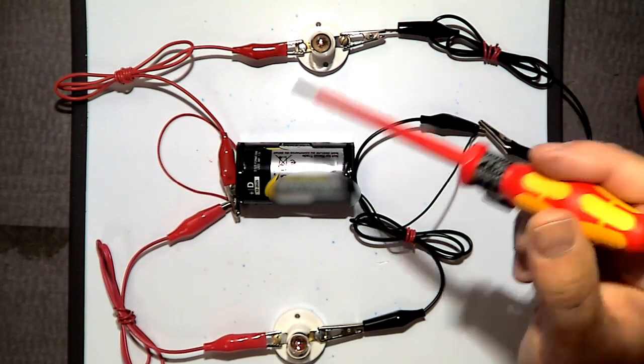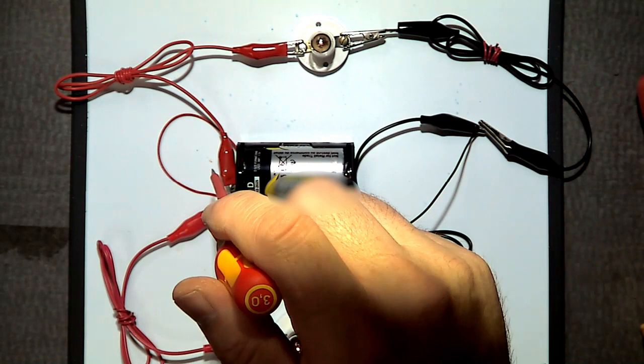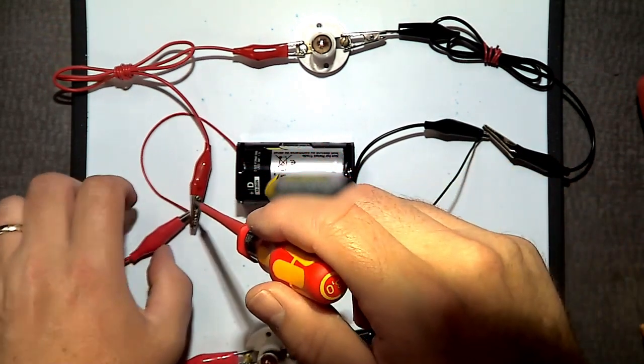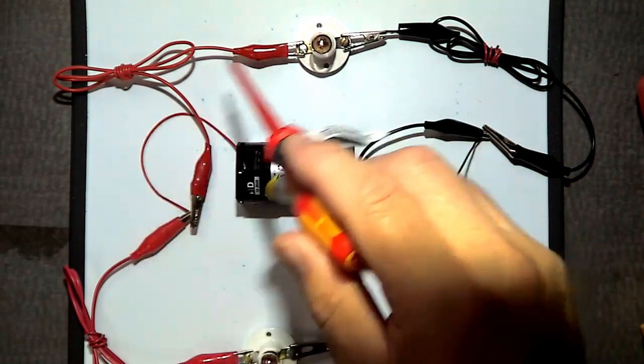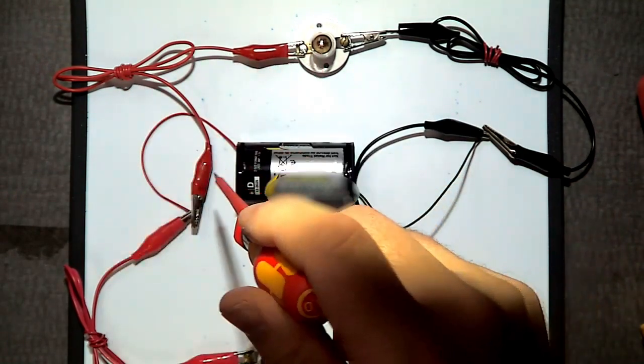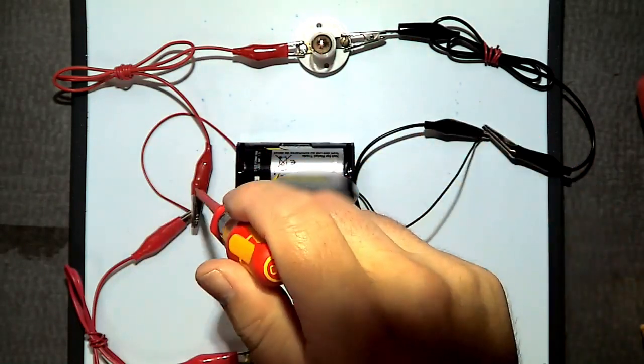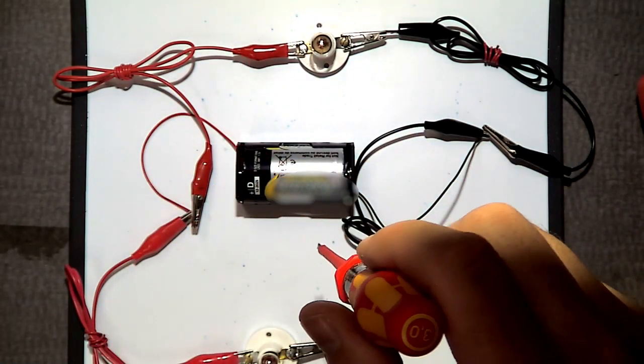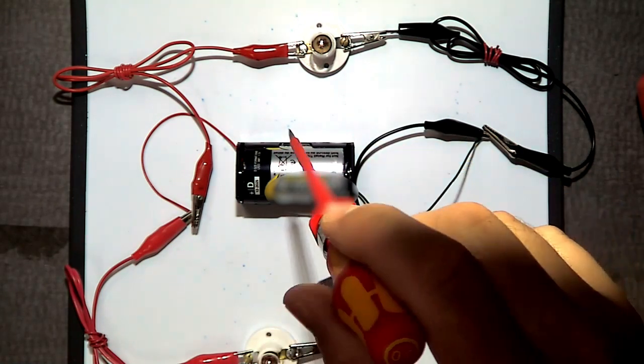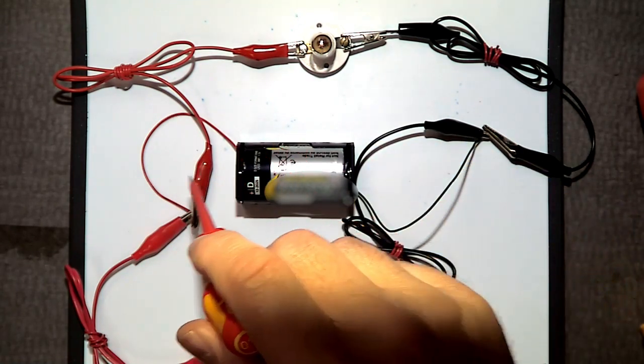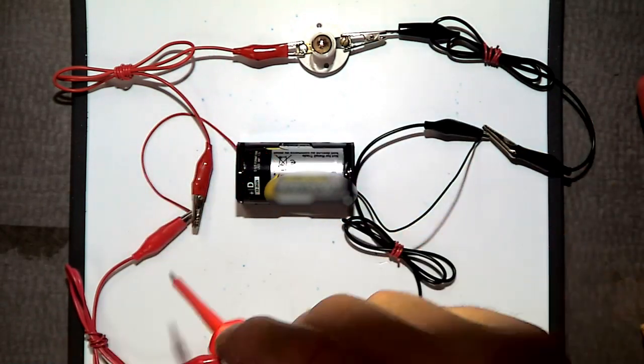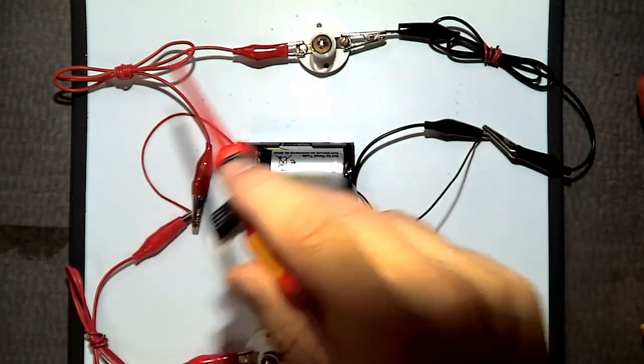Now when we look at our circuit, current's leaving the positive terminal on the battery and it reaches this point and it can split. It has two pathways now. It can go through the top bulb or it could go through the bottom bulb. And so this is an example of a parallel circuit because there are multiple branches. The current can flow through the top or the bottom, or some of the current going through the top and the bottom.